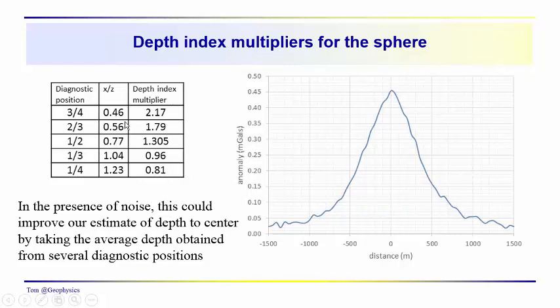So here we have five different diagnostic positions, five different depth index multipliers. From this anomaly, we can get five different estimates of z.